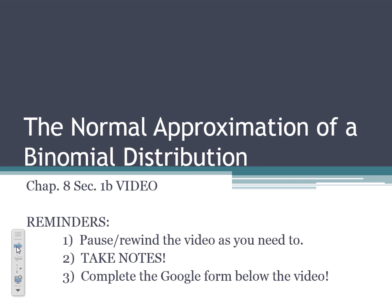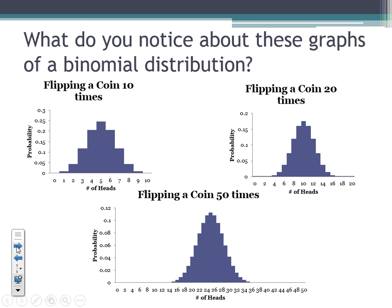To begin, I want to look at a couple of graphs. Think about what you notice about these graphs of a binomial distribution. The graph in the top left shows what happens if you flip a coin 10 times — that's the distribution of outcomes. We can get anywhere from 0 to 10 heads, with the highest probability right in the middle at 5.